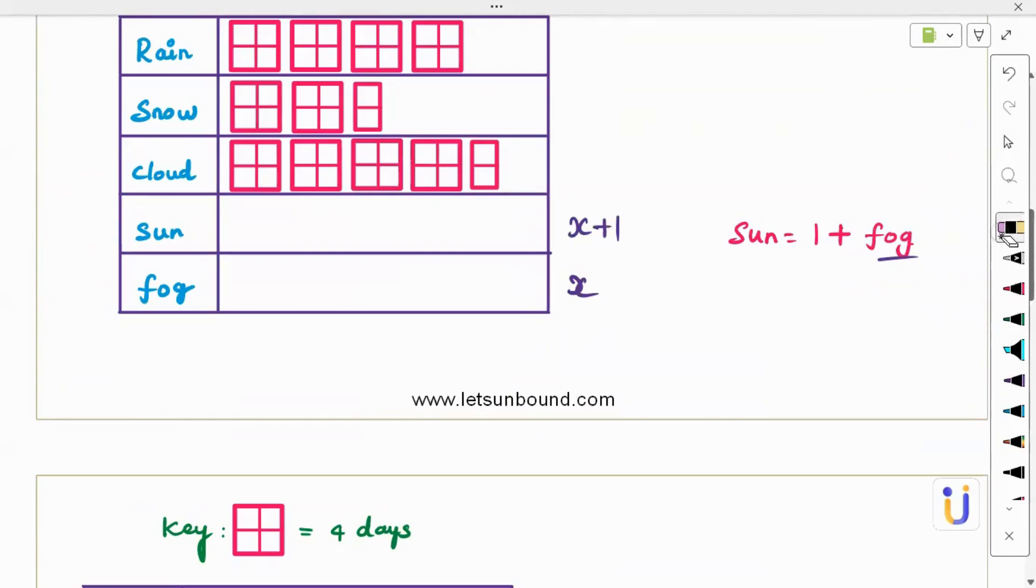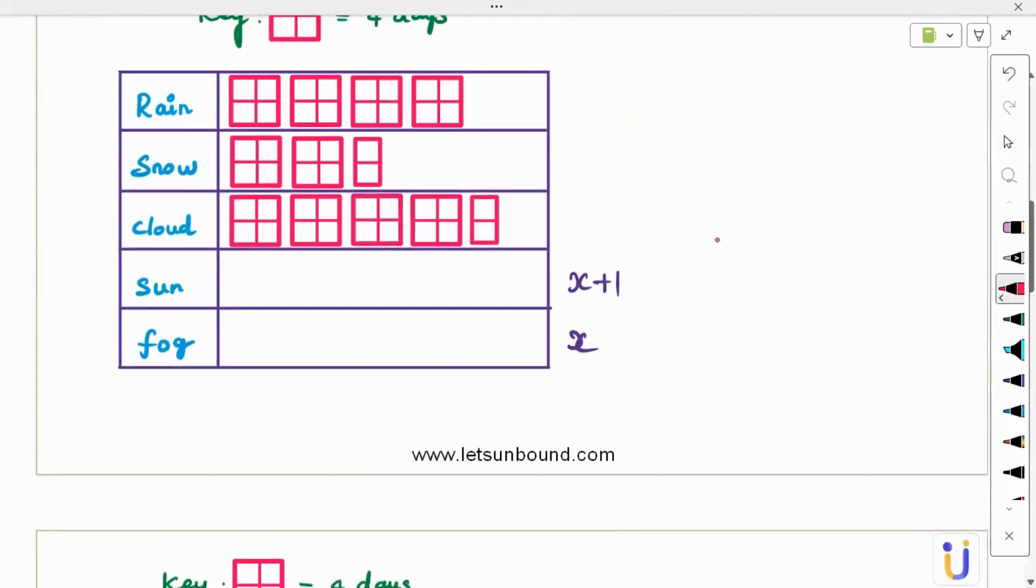We have defined a variable. Now how to solve? We have one more clue: the weather is totally for 55 days. So for rain, recorded for how many days? Quite simple. One picture represents four days, so here four times four which is 16, so 16 days rain is recorded.